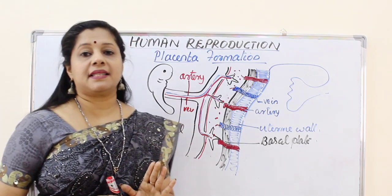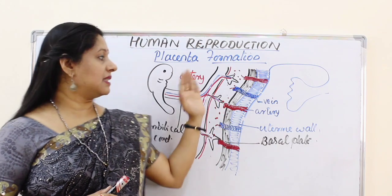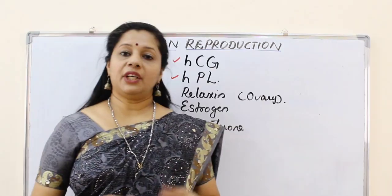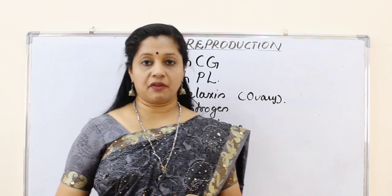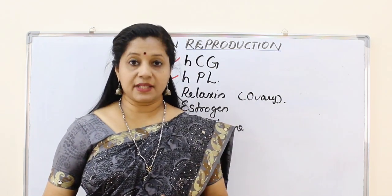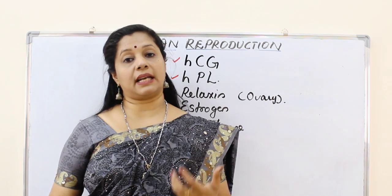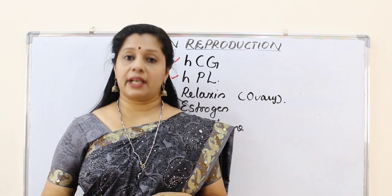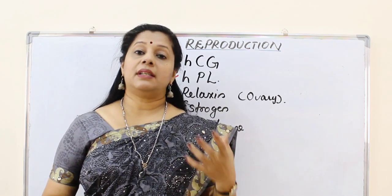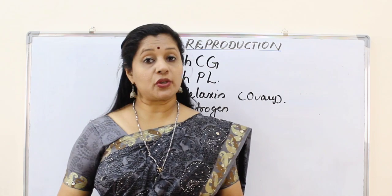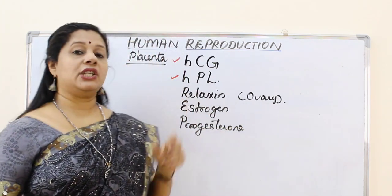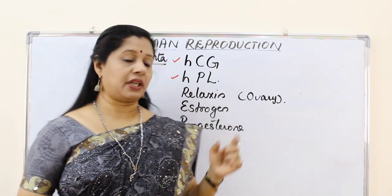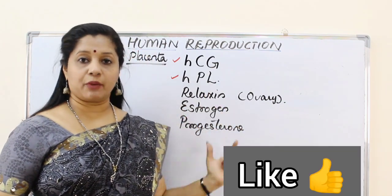This is the placenta formation, which sustains the development of the baby during the gestation period. The functions of the placenta include providing oxygen and nutrients for the embryo and removing carbon dioxide and nitrogenous waste. Apart from that, it can act as an endocrine tissue — a tissue which secretes hormones. The hormones secreted by the placenta are: HCG (human chorionic gonadotrophin), HPL (human placental lactogen), relaxin, estrogen, and progesterone.